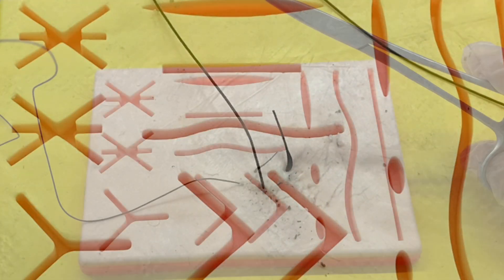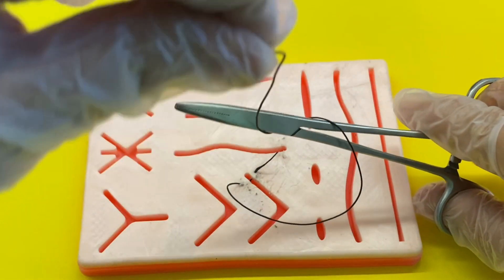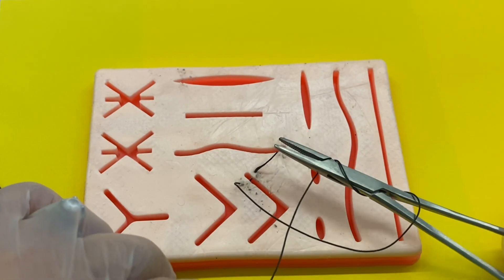Now, making sure that the thread is loose, you're going to wrap it around the needle holder once, then twice, opening up your needle holder and grabbing the end of the suture thread.